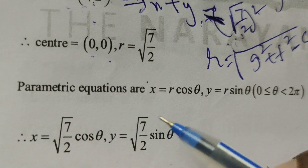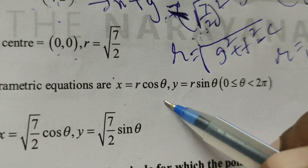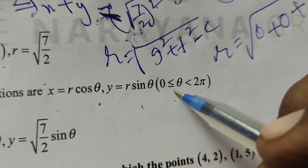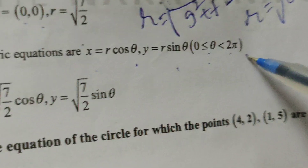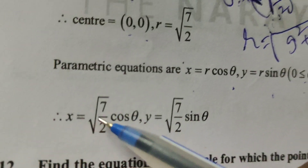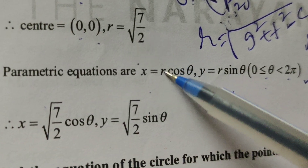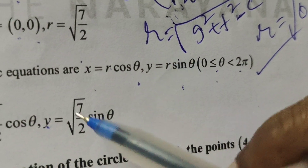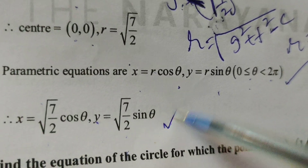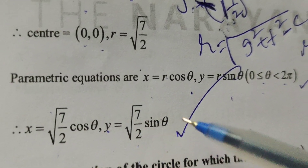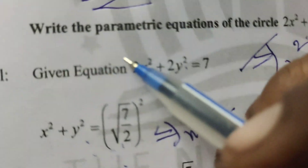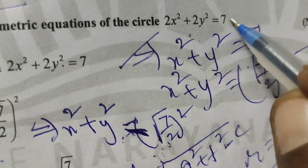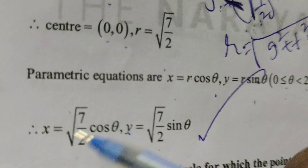Then, the parametric equation formulae: x equals r cosθ, y equals r sinθ, where 0 less than or equal to θ less than or equal to 2π. So x equals root of 7 by 2 cosθ, y equals root of 7 by 2 sinθ. This is the solution of the given circle 2x squared plus 2y squared equals 7 — the parametric equations.